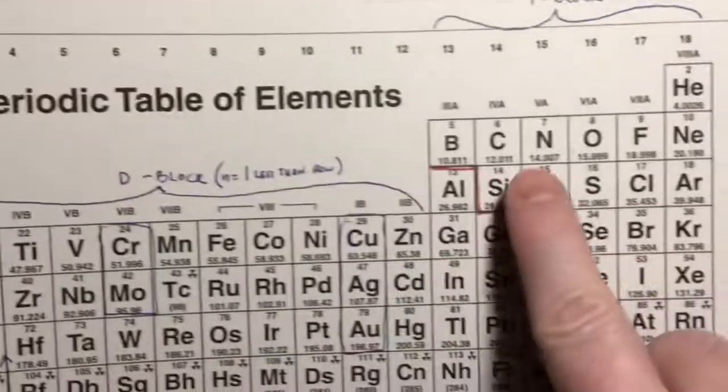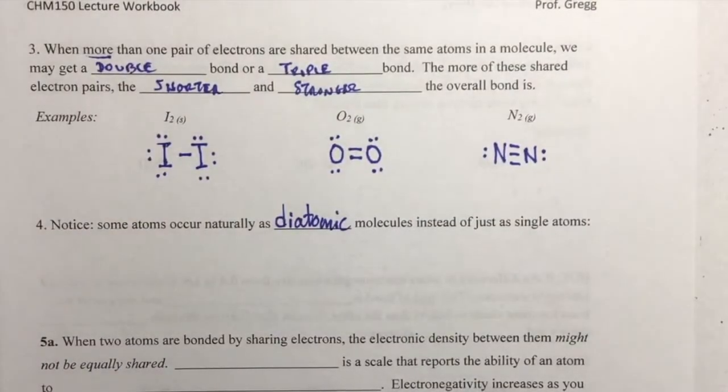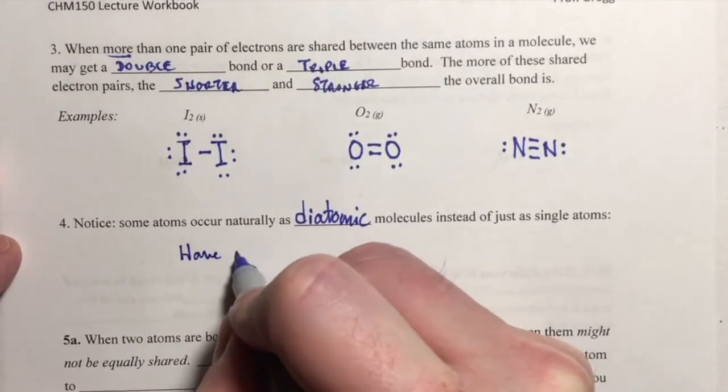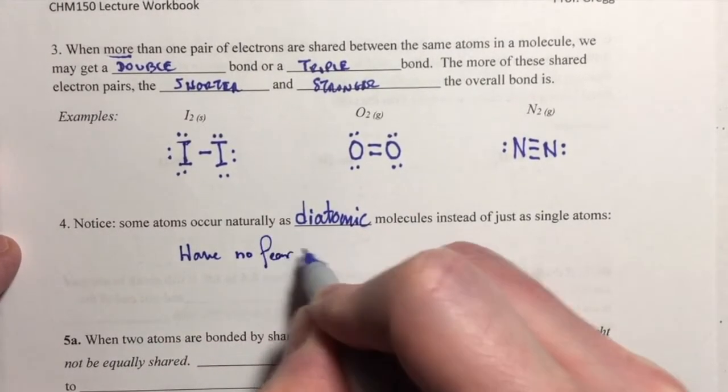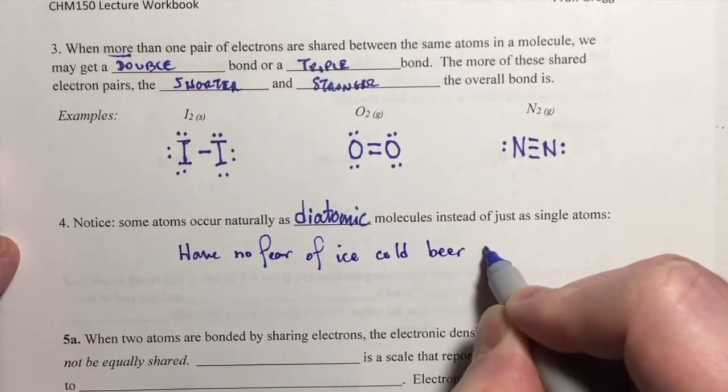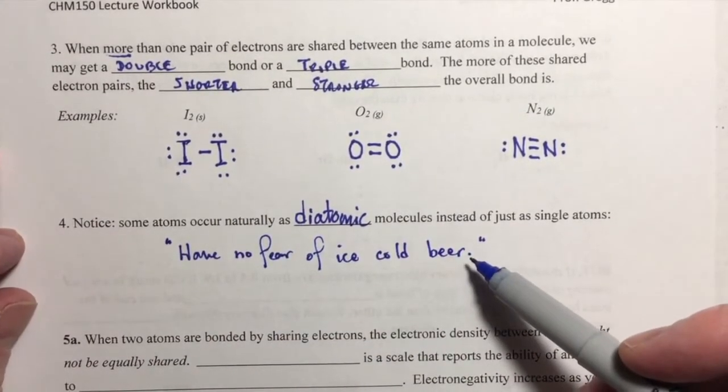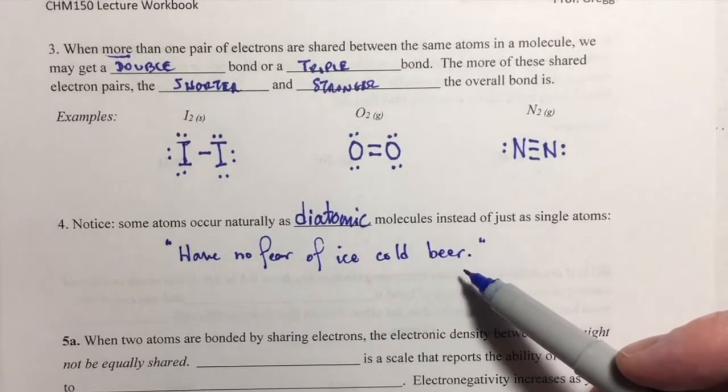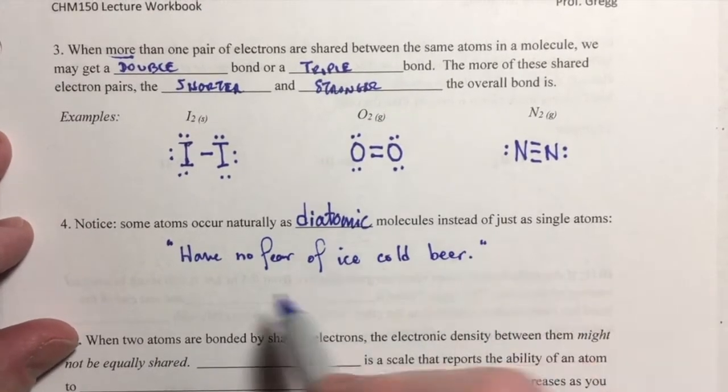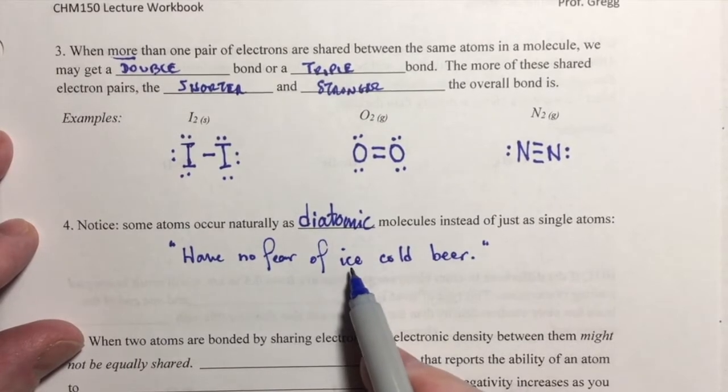Hydrogen and then that corner from nitrogen around the corner to iodine. Some of you may have learned a memory aid in your previous class. And the memory aid is have no fear of ice cold beer. I'm not recommending that you drink, I'm just saying that this is a memory aid that a lot of you have learned. The first letters in each of these words, H-N-F-O-I-C-B.